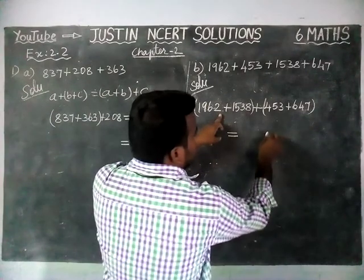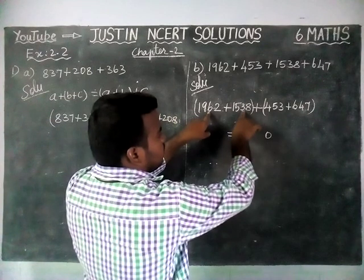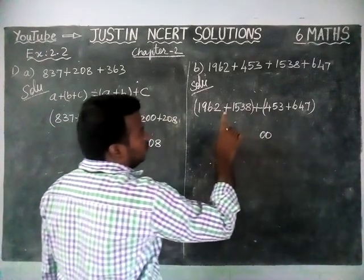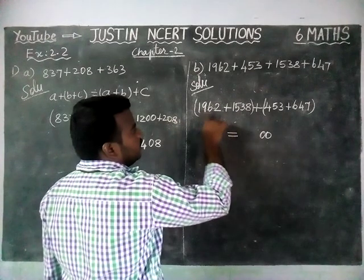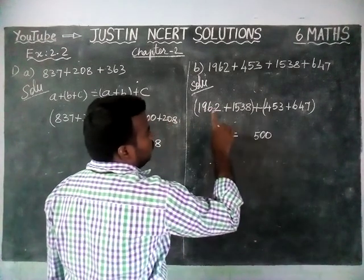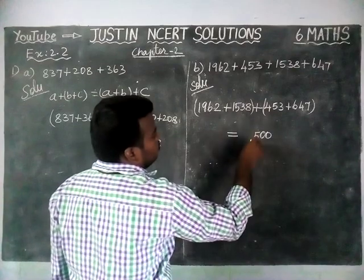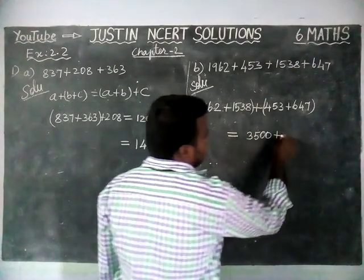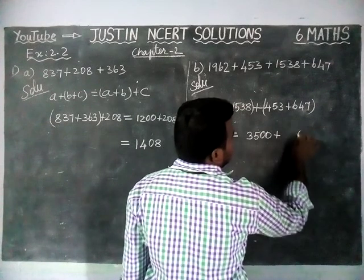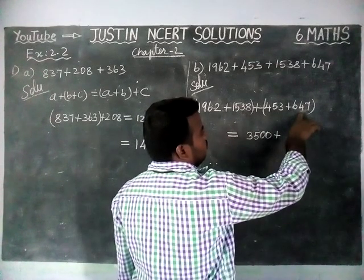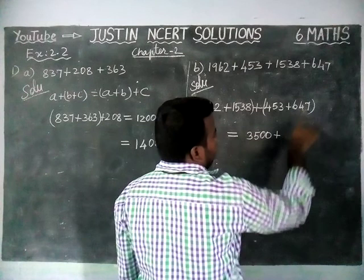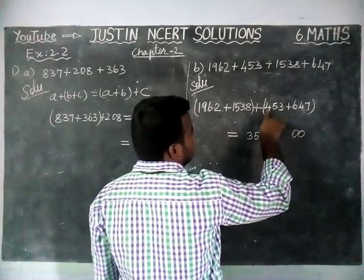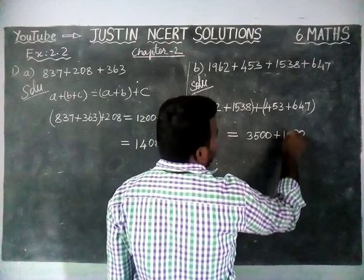Now adding: 8 plus 2 is 10, carry 1. 6 plus 3 is 9, plus 1 is 10, carry 1. 9 plus 5 is 14, plus 1 is 15, carry 1. 1 plus 1 is 2, plus 1 is 3. So we get 3500. Then 3 plus 7 is 10, carry 1. 5 plus 4 is 9, plus 1 is 10, carry 1. 6 plus 4 is 10, plus 1 is 11.